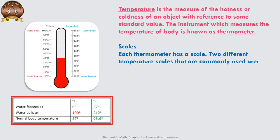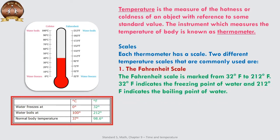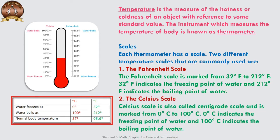Each thermometer has a scale. Two different temperature scales that are commonly used are: first, the Fahrenheit scale. The Fahrenheit scale is marked from 32°F to 212°F. 32°F indicates the freezing point of water and 212°F indicates the boiling point of water.